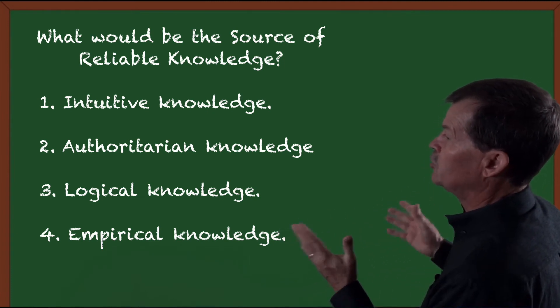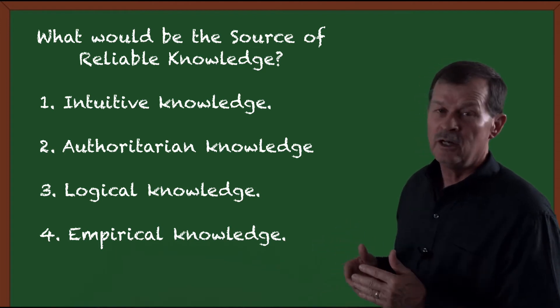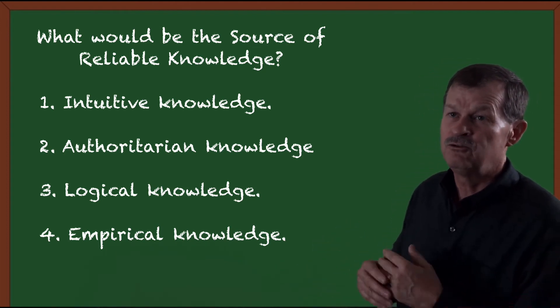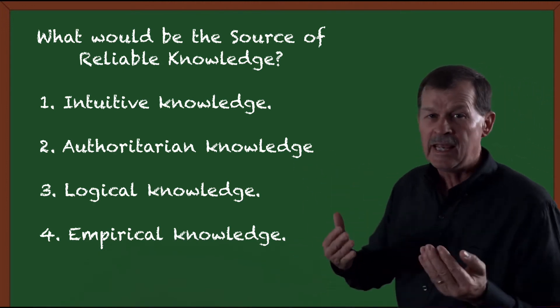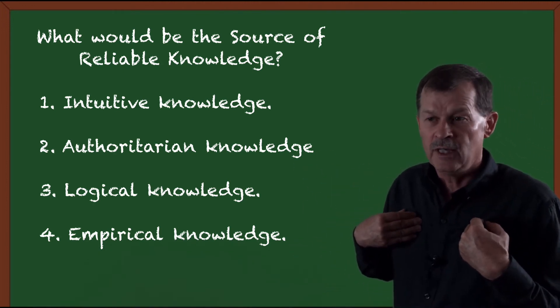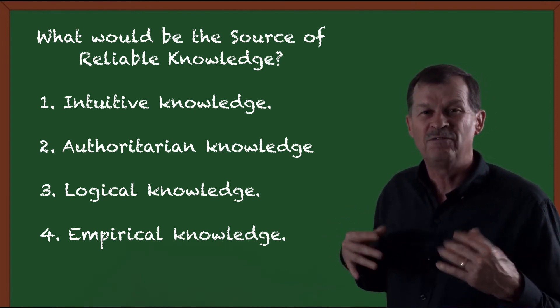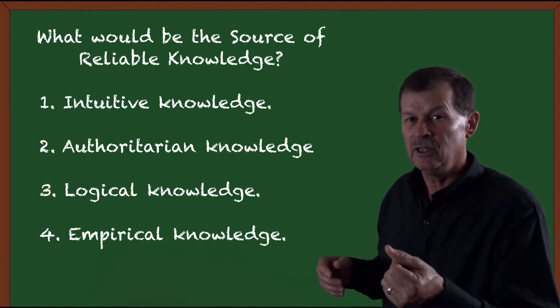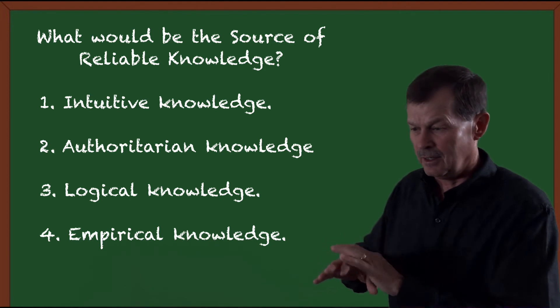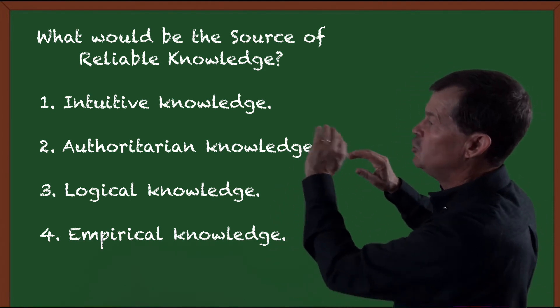So what would be the source of reliable knowledge? There are four recognized general sources of reliable knowledge. Intuitive knowledge means inward, personal knowledge of the person. It could have to do with feelings — 'I just know it.' It is not defended logically or empirically. It's just 'I feel this is right.' That is intuitive knowledge.